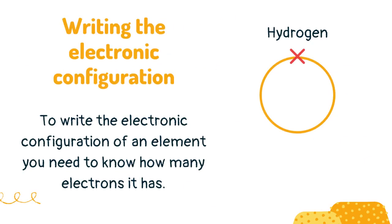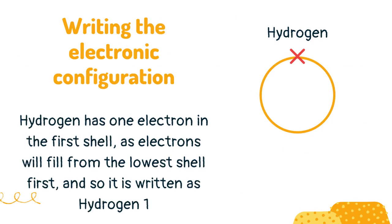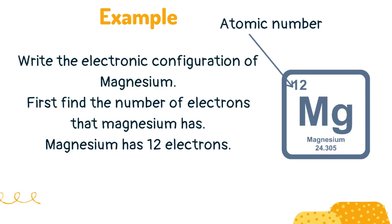To write the electronic configuration of an element you need to know how many electrons it has. Hydrogen has 1 electron in the first shell, as electrons fill from the lowest shell first, and so it is written as hydrogen 1. Now write the electronic configuration of magnesium.